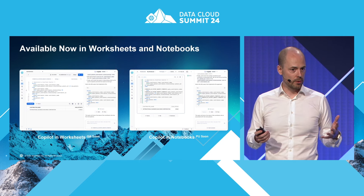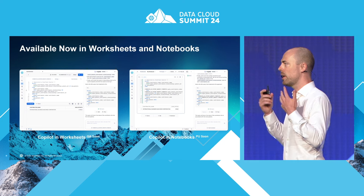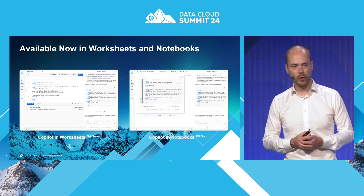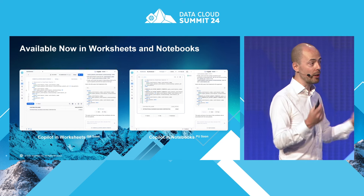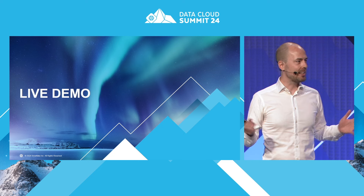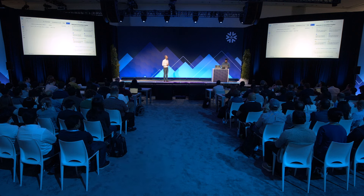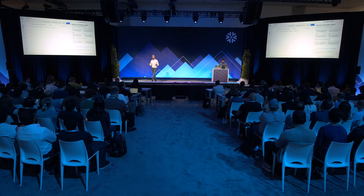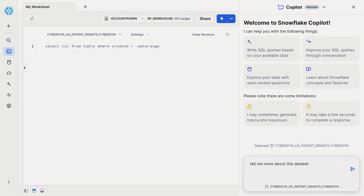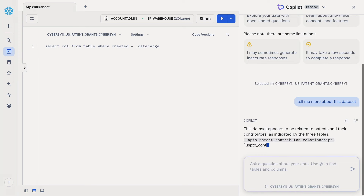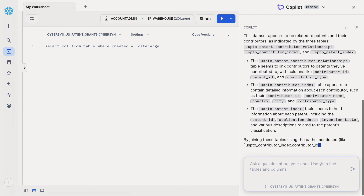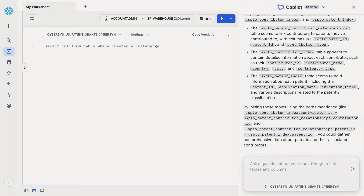Snowflake Copilot has been available in Worksheets, which will go into general availability very soon, and it's also available in Notebooks as part of public preview. What you can see here is a worksheet in Snowsight with the Copilot side panel on the right. We've selected a dataset that has information about US patents. You can ask a question like 'tell me about this dataset,' and Copilot will start to analyze the selected schema and give you a natural language explanation of what's available — describing each individual table and its underlying columns. This is an easy way to familiarize yourself with a dataset.